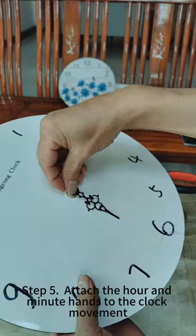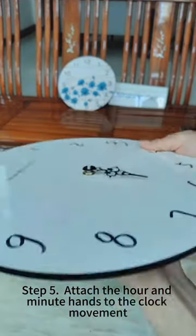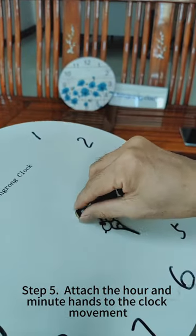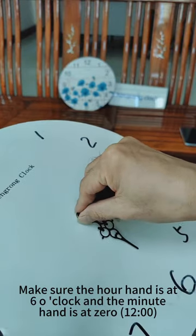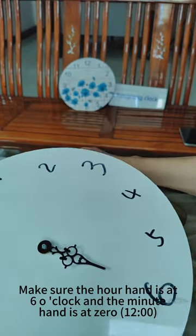Step 5. Attach the hour and minute hands to the clock movement. Make sure the hour hand is at 6 o'clock and the minute hand is at 12 o'clock.